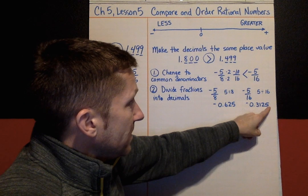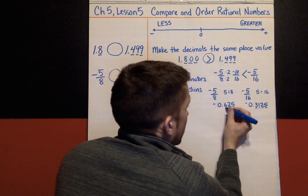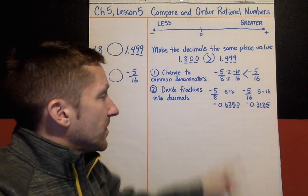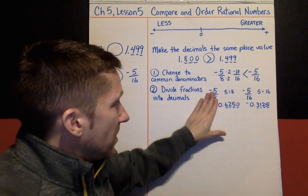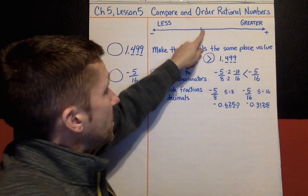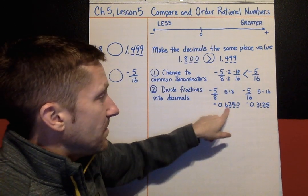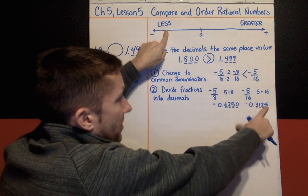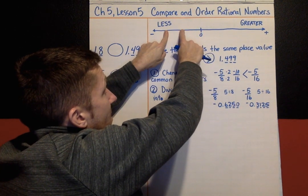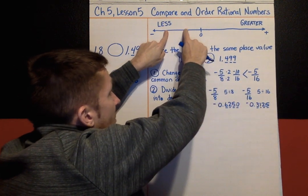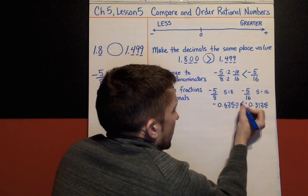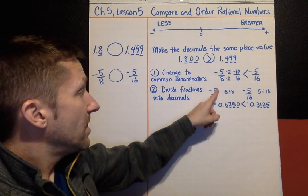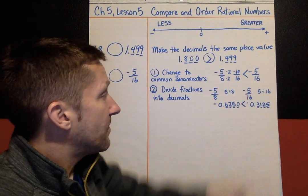Now I'll combine strategies. −0.3125 has four decimal places; −0.625 has three, so I'll add a zero to make it −0.6250. Ignoring the negatives, 0.6250 is a greater amount than 0.3125 — but in the negative direction that means −0.625 goes further left on the number line. So −0.625 is less than −0.3125, confirming: negative 5/8 is less than negative 5/16.